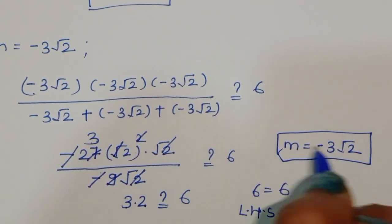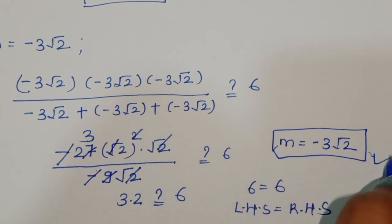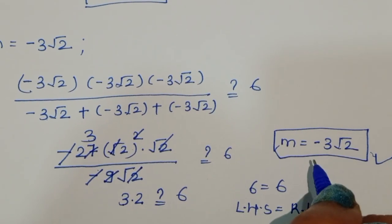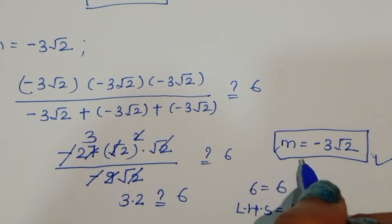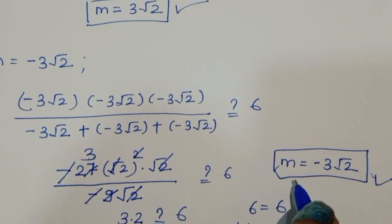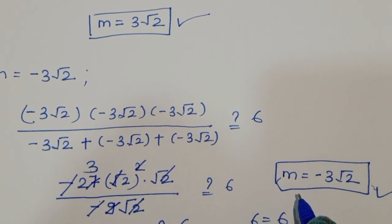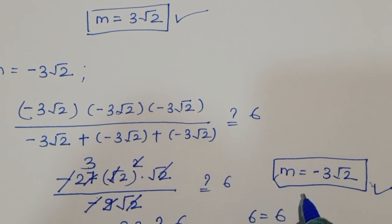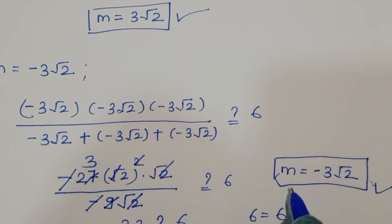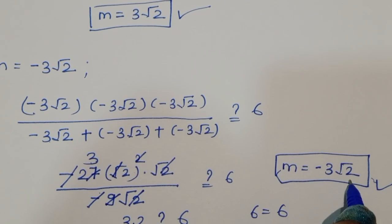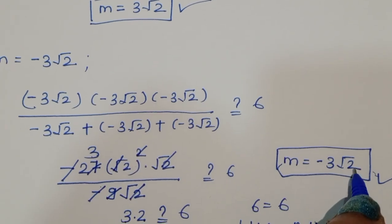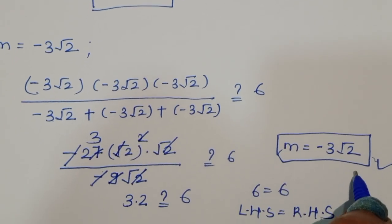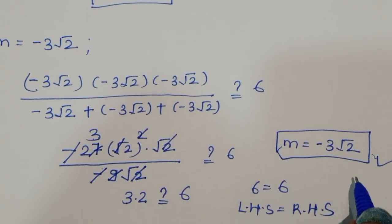So we have two solutions for m: the positive value 3√2 and the negative value −3√2. Thank you.